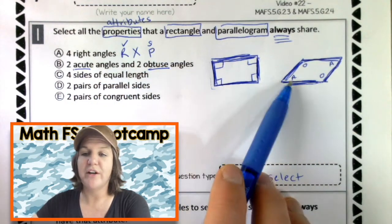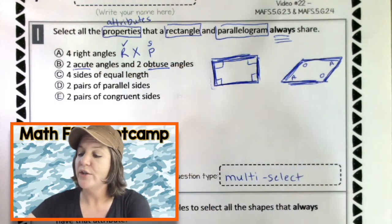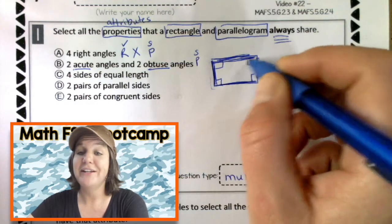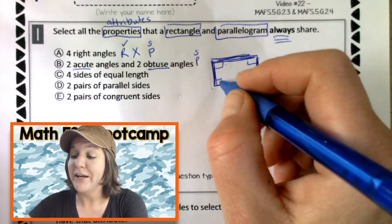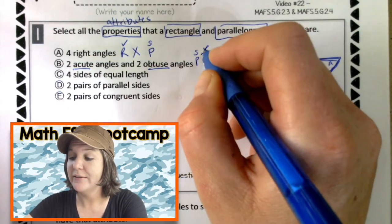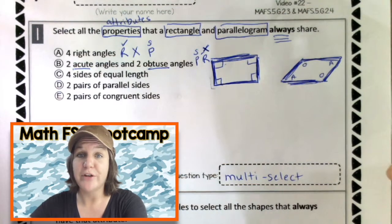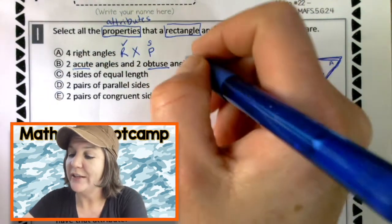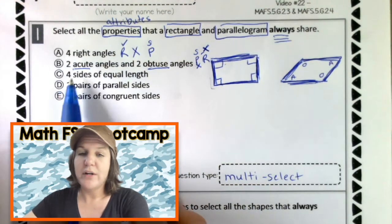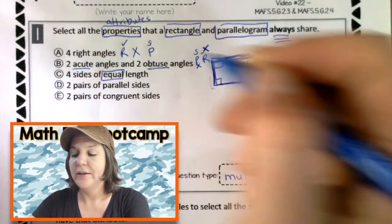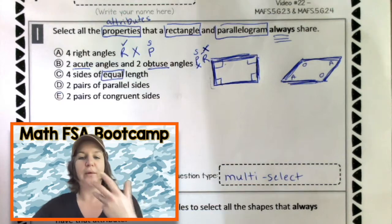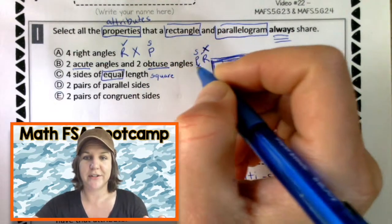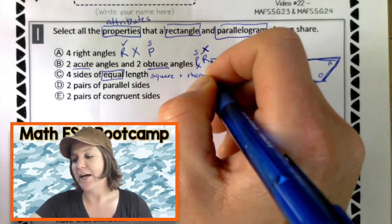Two acute and two obtuse angles. We've already identified that in mine, I have two acute and two obtuse angles. So a parallelogram still is sometimes. It does not have to because like I said before, a rectangle is technically a parallelogram, but a rectangle can not have two acute angles and two obtuse angles, because a rectangle has to have what kind of angles? It has to have right angles, right? So we can eliminate this one. Nope. Four sides of equal length. No. The only two things that all, the only two quadrilaterals that always have four sides of equal length would be a square. And what else? A rhombus. A square and a rhombus. Not these two. Okay.